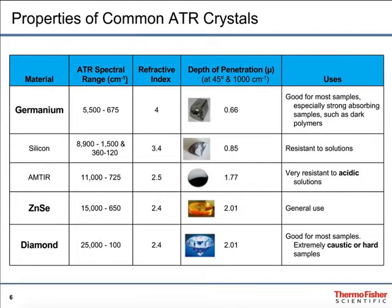However, diamond is also the most expensive. Zinc selenide has a very similar depth of penetration, but the crystal is much softer, and therefore it's not nearly as robust, and it has a slightly narrower spectral range. Germanium has the advantage of a very high index of refraction, which gives it a shallow depth of penetration. So for materials which are either highly absorbing or highly scattering, like carbon black rubbers, those materials are very easy to run on germanium, where the spectra on other materials would not be as good.